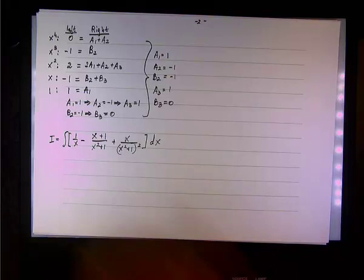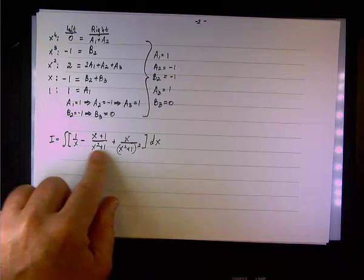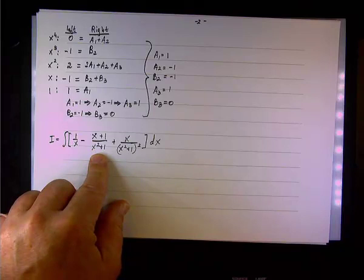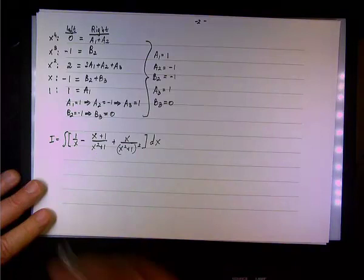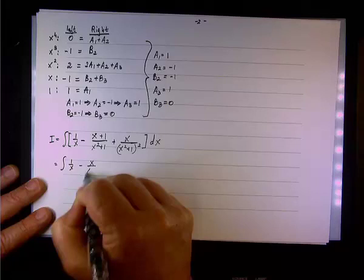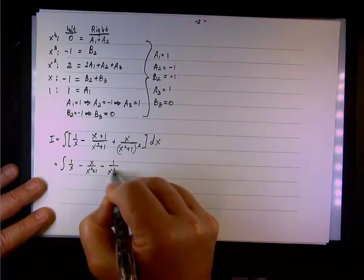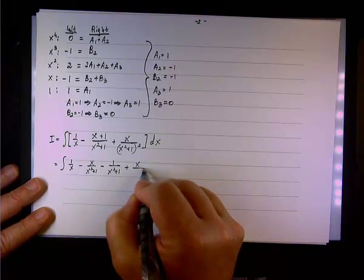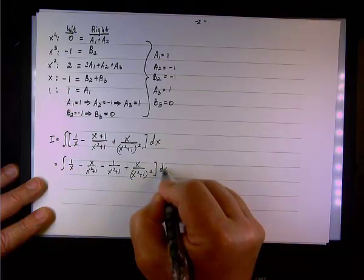Since I can look ahead, it's better to split (x + 1)/(x² + 1) now. We rewrite the integrand as four terms: 1/x − x/(x² + 1) − 1/(x² + 1) + x/(x² + 1)², all under the integral dx.